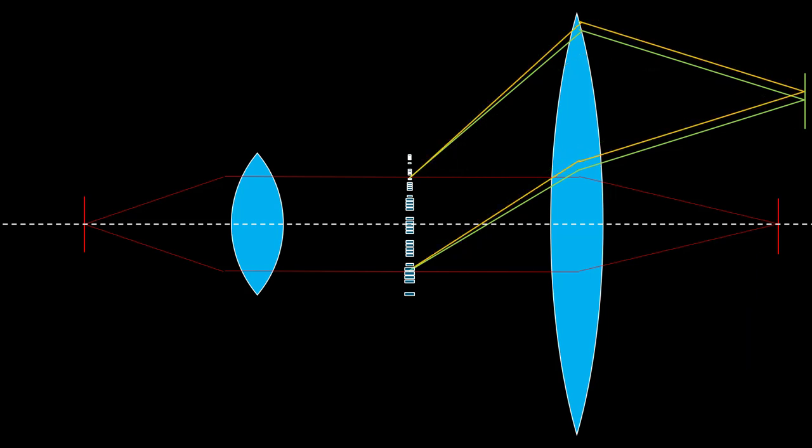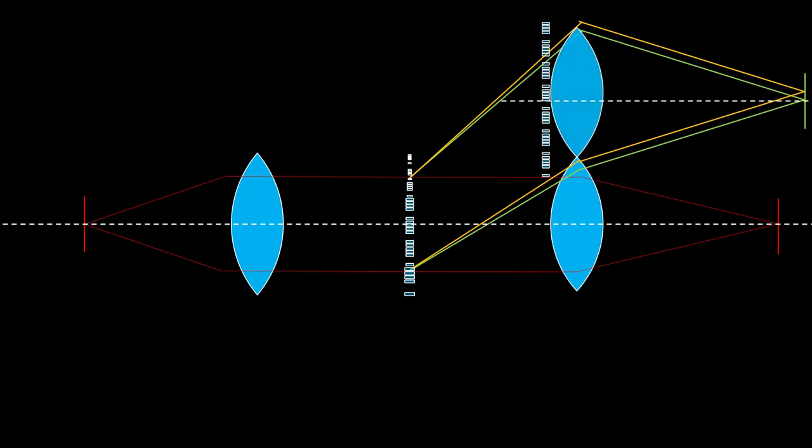Let's tackle the last obstacle, chromatic aberrations. Simply replace your large tube lens with many small tube lenses and add a blaze grating to exactly counter the chromatic effect of the defocus grating. Wonderful.